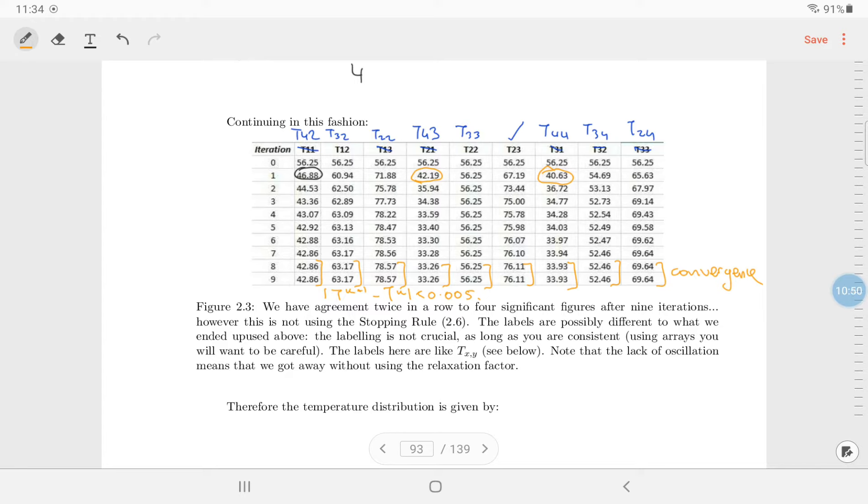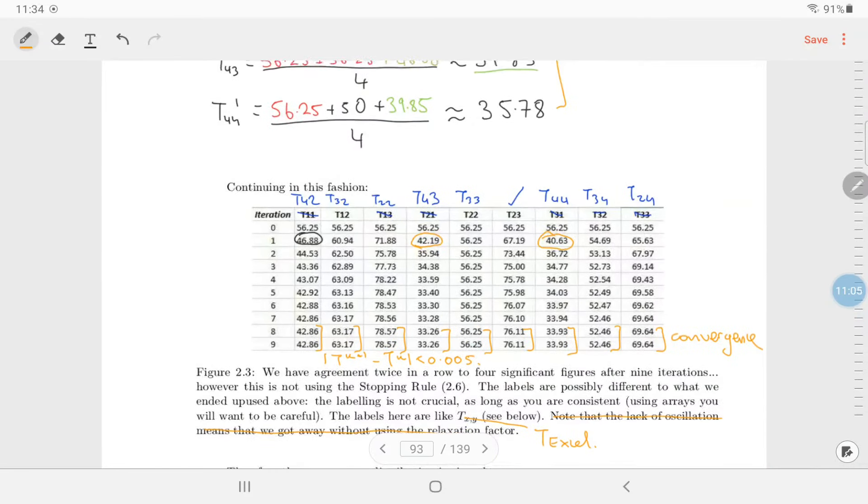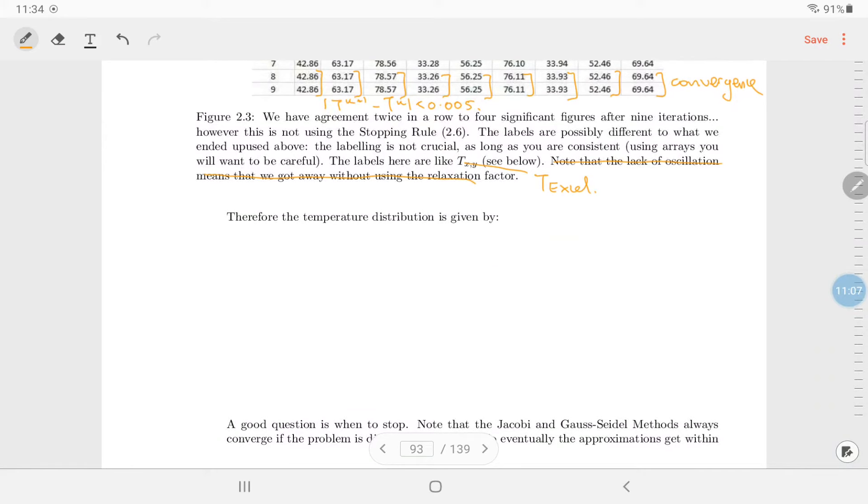And it means that these numbers down the bottom approximate the solutions of the equations. So we have agreement twice in a row to four significant figures after nine iterations, but this is not using the appropriate stopping rule. This would have been done until I think the difference between the iterations and the previous iteration is less than 0.00, maybe five, something like that. So that the disagreement is in the third decimal place. The labels are different to what we ended up. The label is not crucial as long as you're consistent. Labels here are like TXY. Well, the ones we fixed, we'll call them kind of TXL. Note that the lack of oscillations, so don't worry about the relaxation factor. We're just not going to talk about that.